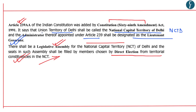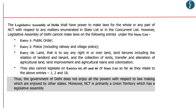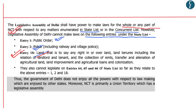Article 239AA categorically says that Delhi shall be a union territory having a legislative assembly. The Delhi legislative assembly shall have power to make laws for the whole or any part of the national capital territory with respect to matters in the state list or concurrent list. However, there are restrictions — the legislative assembly of Delhi cannot make laws on public order, police, and land. So the Delhi government does not enjoy all law-making powers enjoyed by other states. These are some basic facts with respect to the union territory of Delhi.